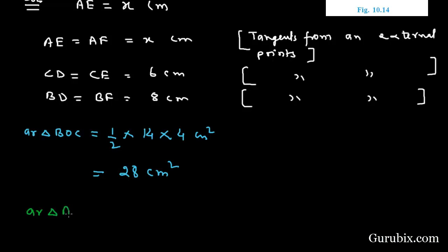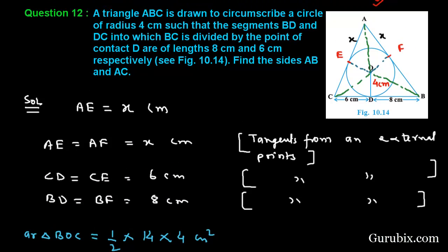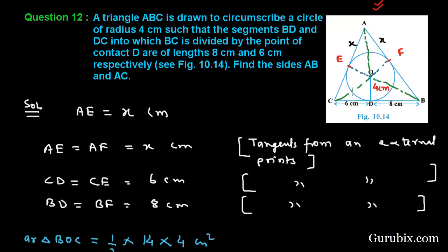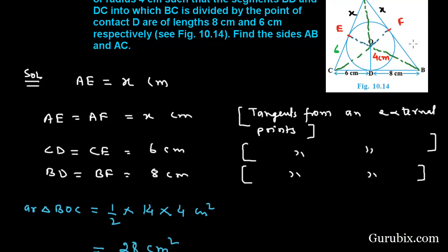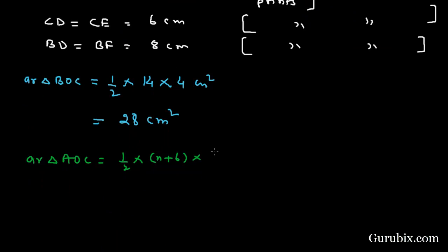Now we shall find the area of triangle AOC. We use the formula: half times base times height. The base is AC, which equals X plus 6 centimeters. The height is OE, which is the radius of the circle, equal to 4 centimeters. Therefore the area of triangle AOC equals 2 times (X plus 6) square centimeters.